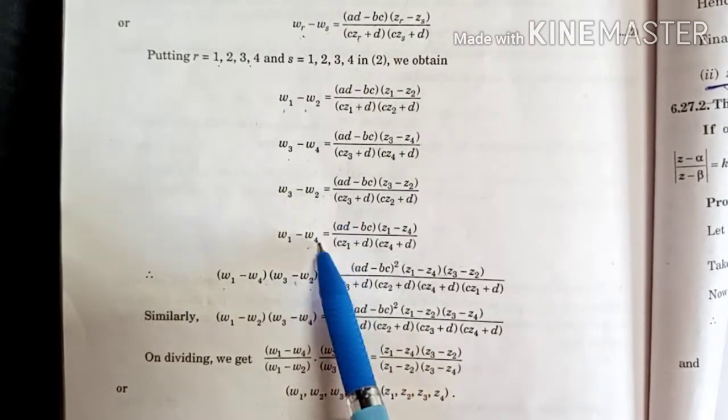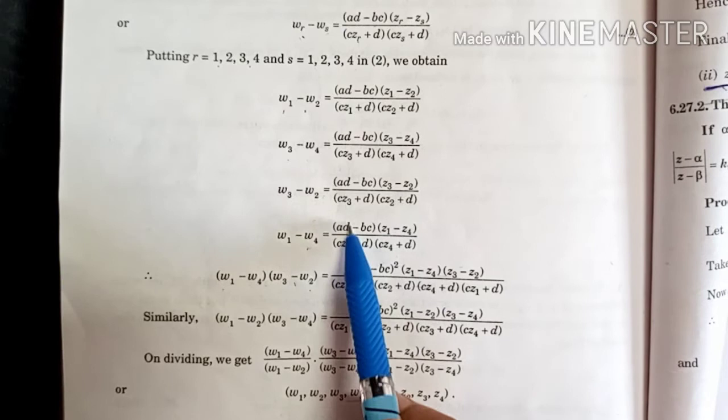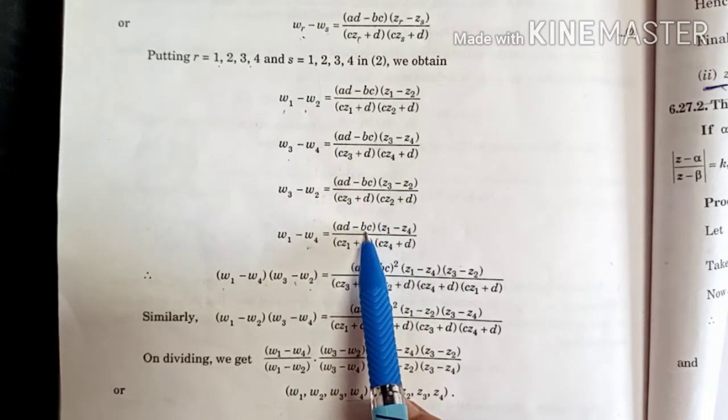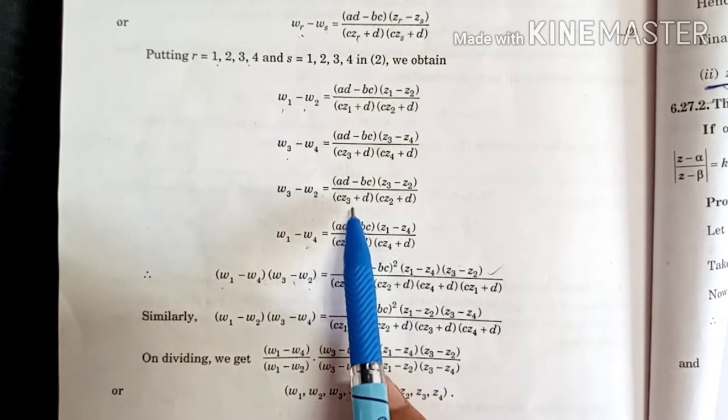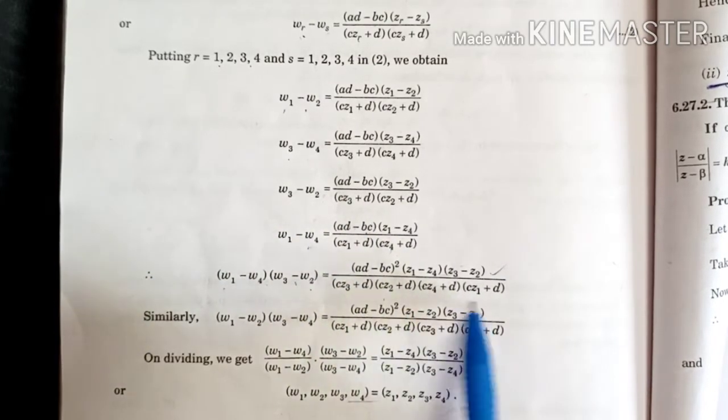That means we have to find the product of these two factors. When we do the product of both, AD minus BC appears two times. Z3 minus Z2, Z1 minus Z4 product. Denominator has four terms separate, so product of all four.